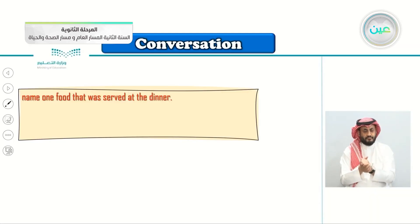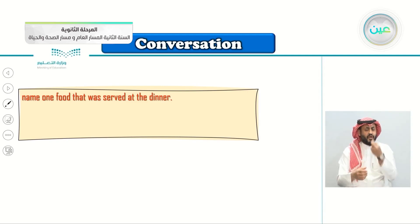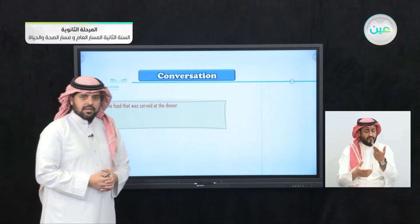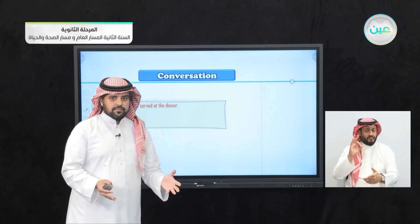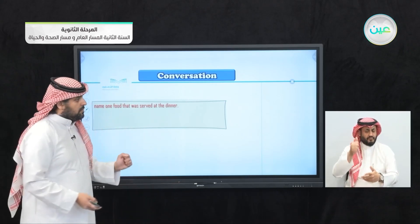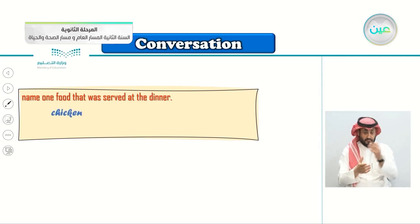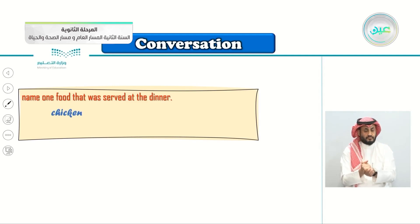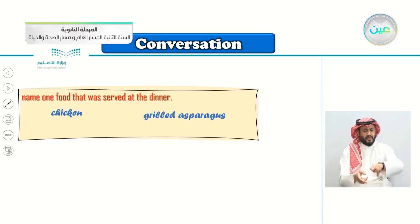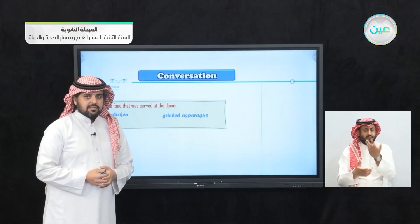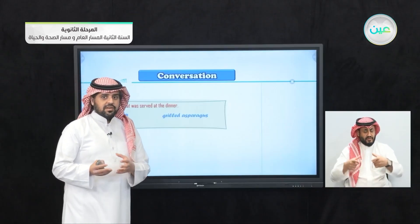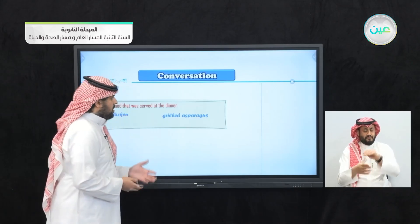Name one food that was served at the dinner. What did Fadwa serve? She served chicken — because she offered chicken to Nawal. Also grilled asparagus — those were the main dishes. What about dessert? Chocolate raspberry cake and also the crème brûlée.